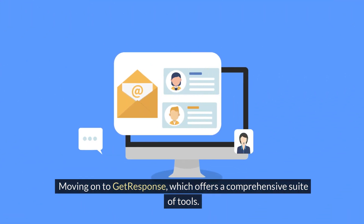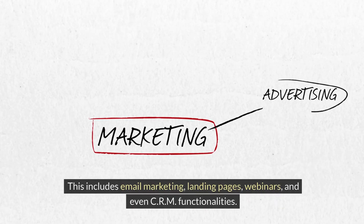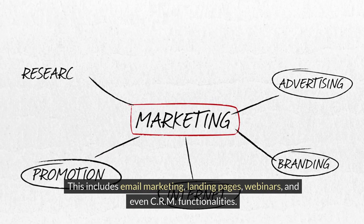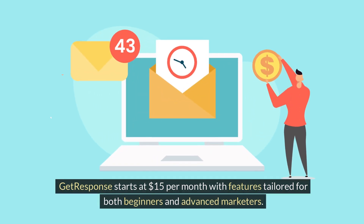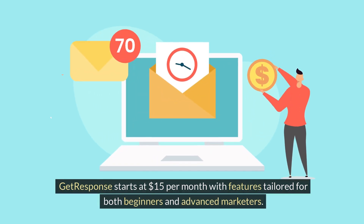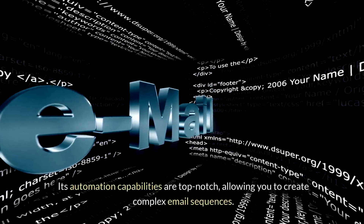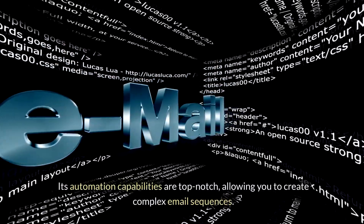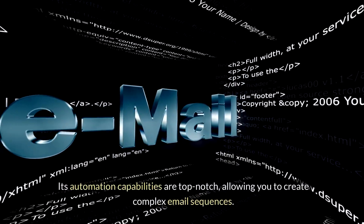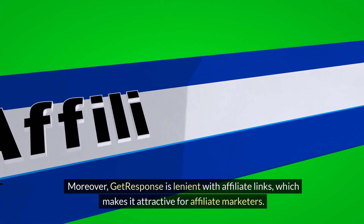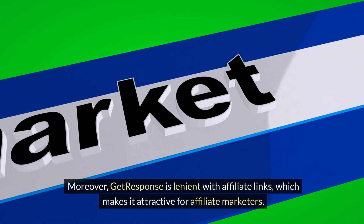Moving on to GetResponse, which offers a comprehensive suite of tools, including email marketing, landing pages, webinars, and even CRM functionalities. GetResponse starts at $1.15 per month with features tailored for both beginners and advanced marketers. Its automation capabilities are top-notch, allowing you to create complex email sequences. Moreover, GetResponse is lenient with affiliate links, which makes it attractive for affiliate marketers.